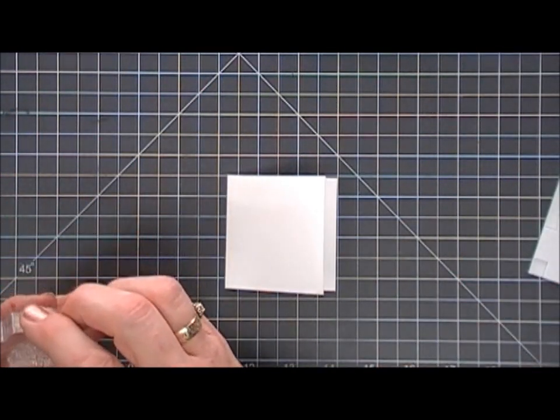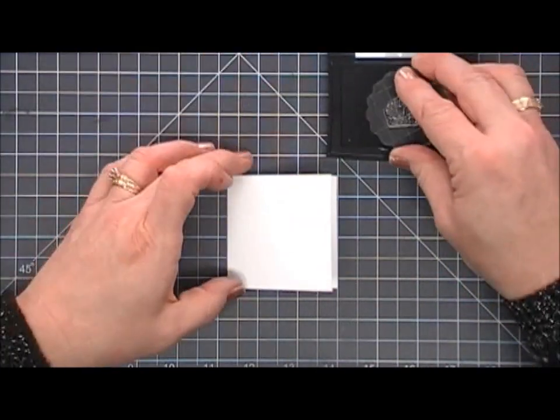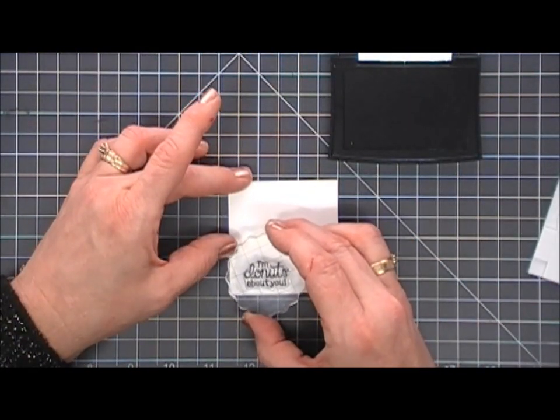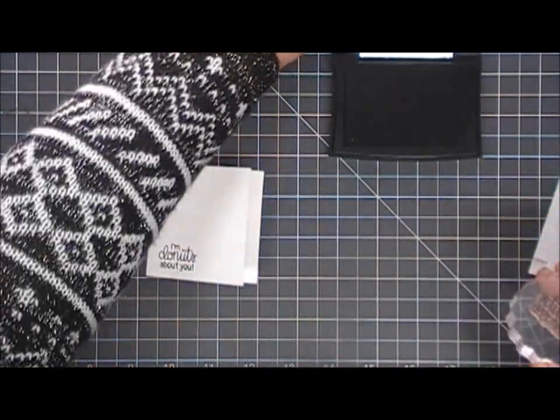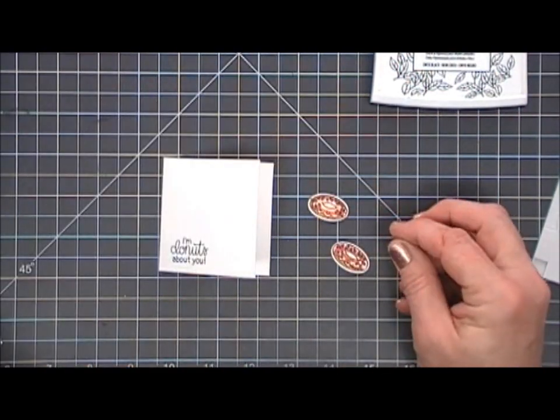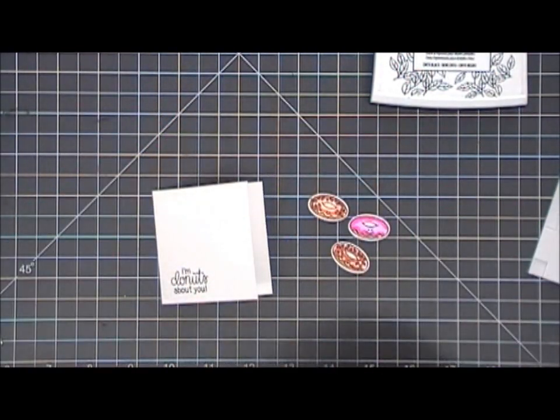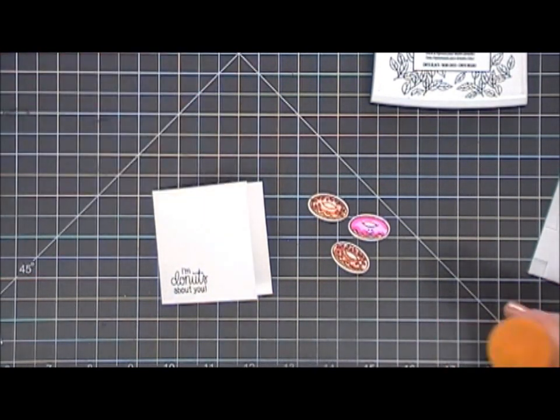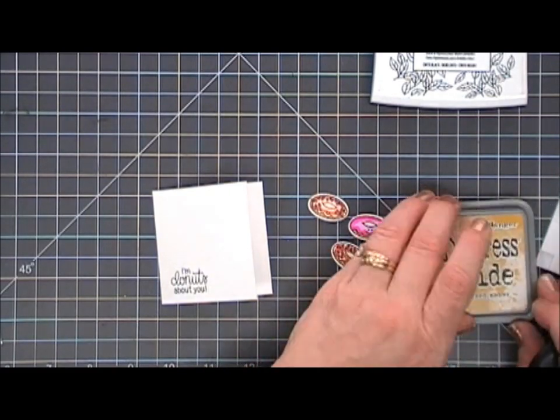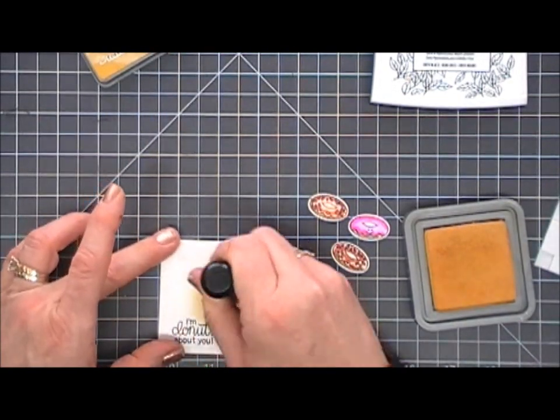Next we're going to make a little donut card. So we're going to stamp the sentiment. The sentiment says 'I'm Donuts about you.' I'm going to stamp that in the bottom here, and then I'm going to go in with some fossilized amber distress oxide ink. Basically I went through my oxides and found the brightest colors that I had.